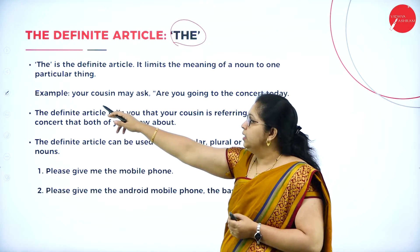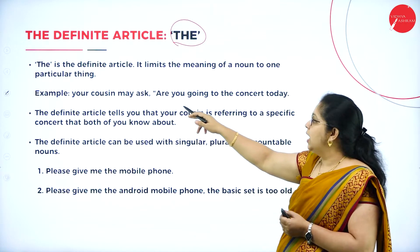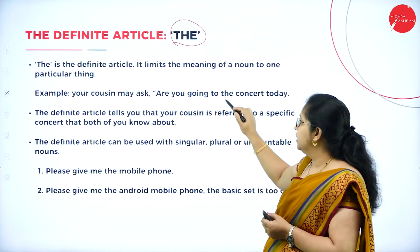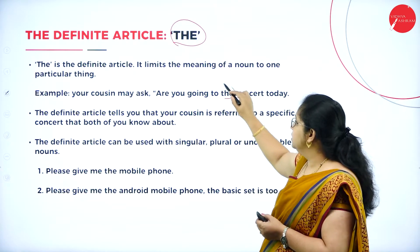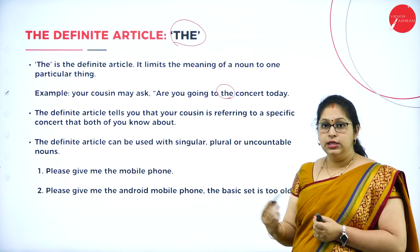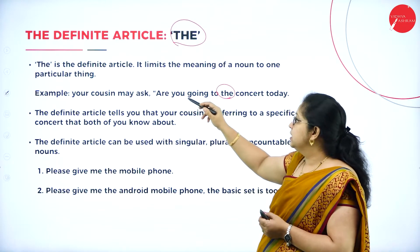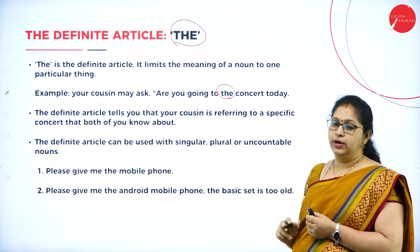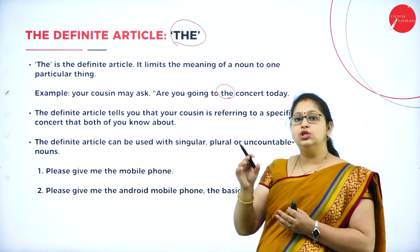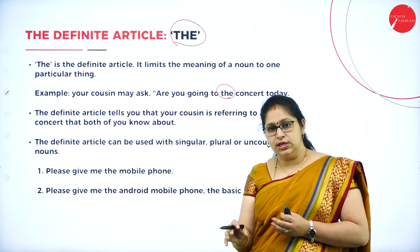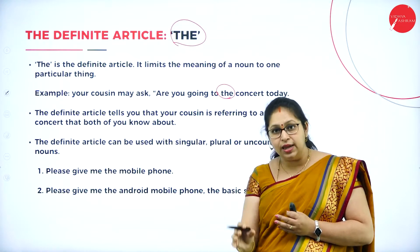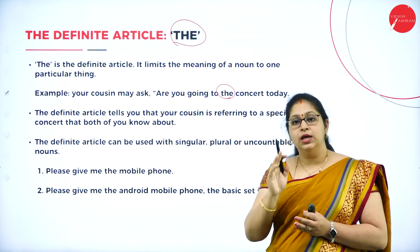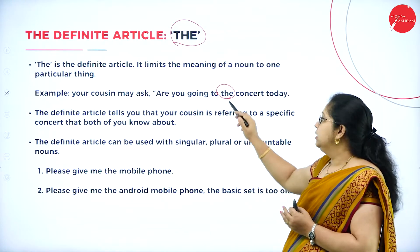For example, your cousin may ask: 'Are you going to the concert today?' The article 'the' is the definite article here. 'The concert today' means you both know there is a concert and you are both talking about the same concert. So when we are very specific, we use the article 'the.'